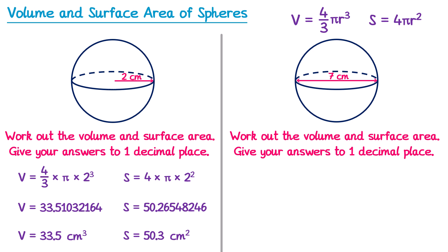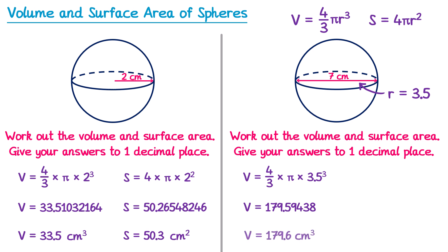For the second question, volume equals 4/3 multiplied by π, multiplied by r³. But we don't have r — we're given the diameter of 7. If the diameter is 7, then the radius will be half of this, which is 3.5. So we multiply by 3.5 cubed. Typing this into the calculator and rounding to one decimal place gives 179.6 centimeters cubed.